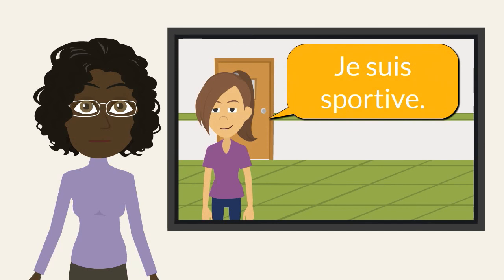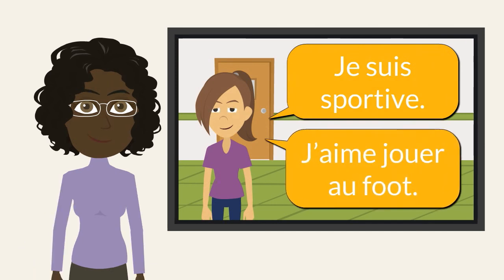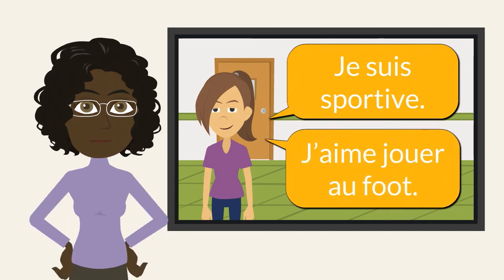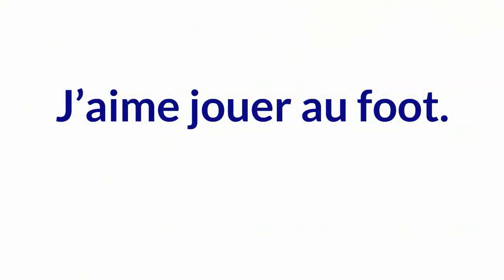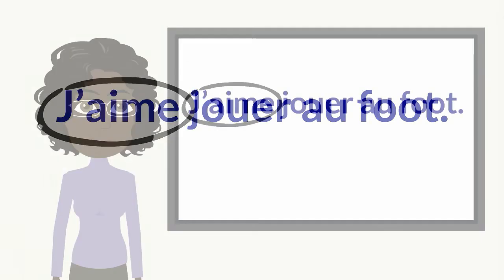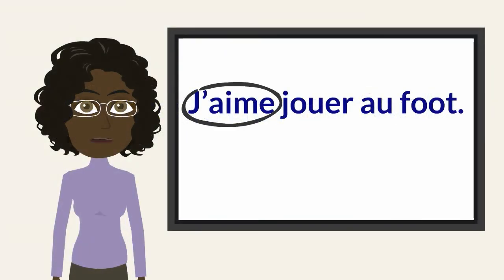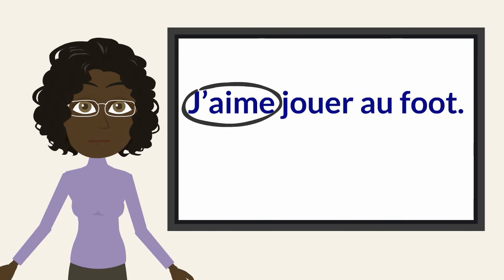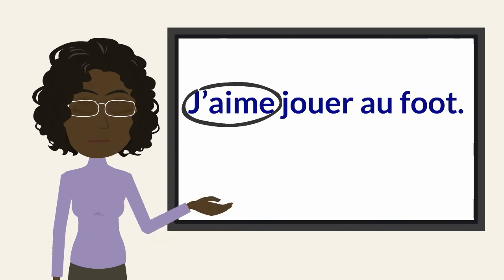Je suis sportive. J'aime jouer au foot. Can you pick out the sentence in which she expresses what she likes to play? Bien sûr! J'aime jouer au foot. Which words express the idea of 'I like'? Oui! J'aime! The words that follow j'aime represent the activity — in this case, to play soccer.